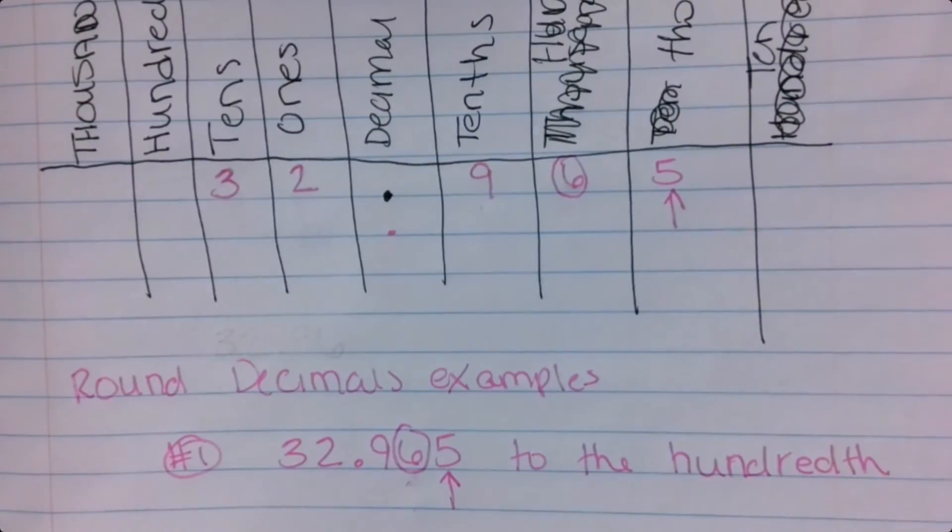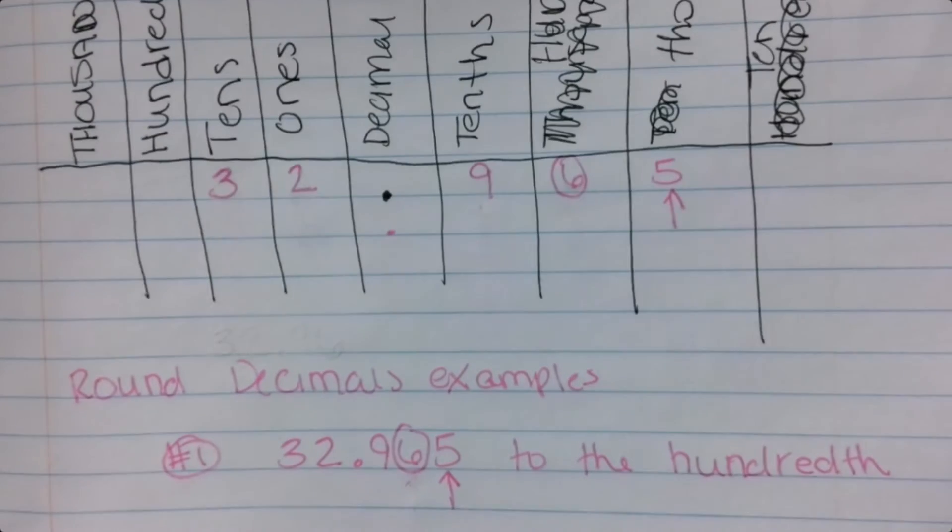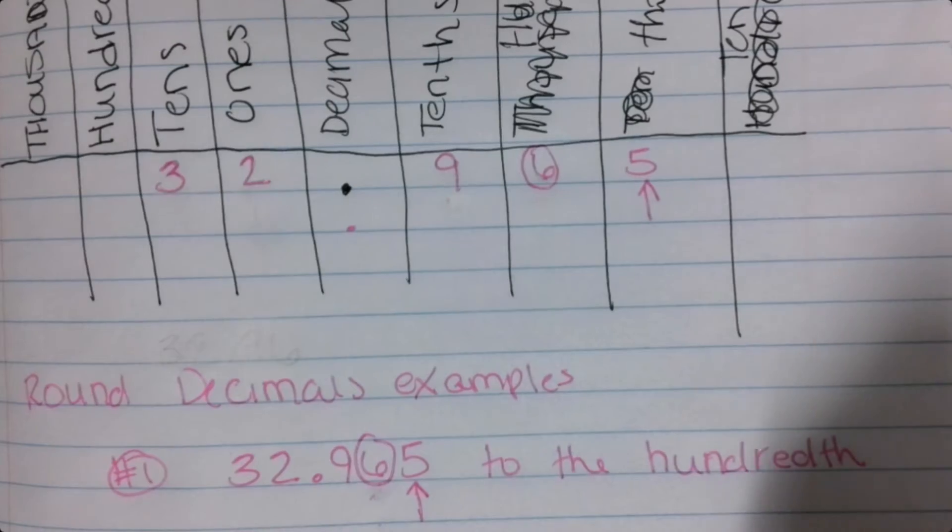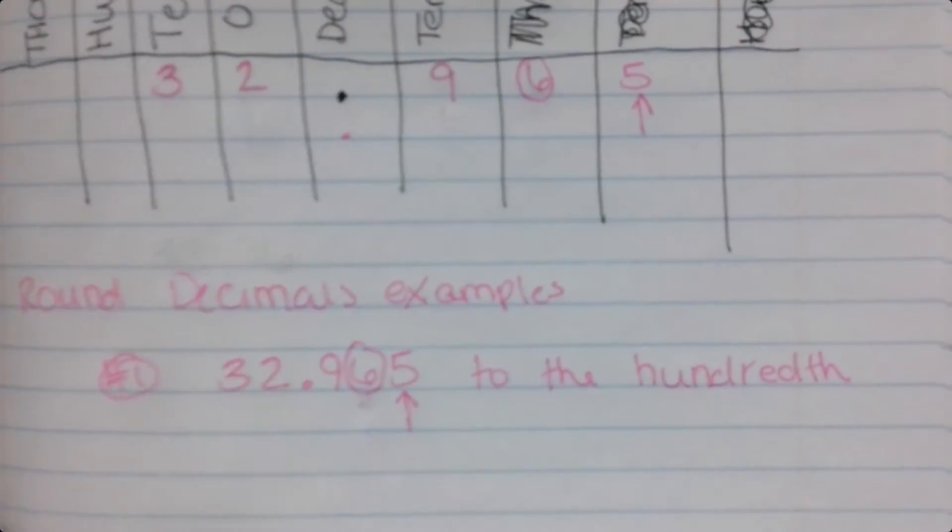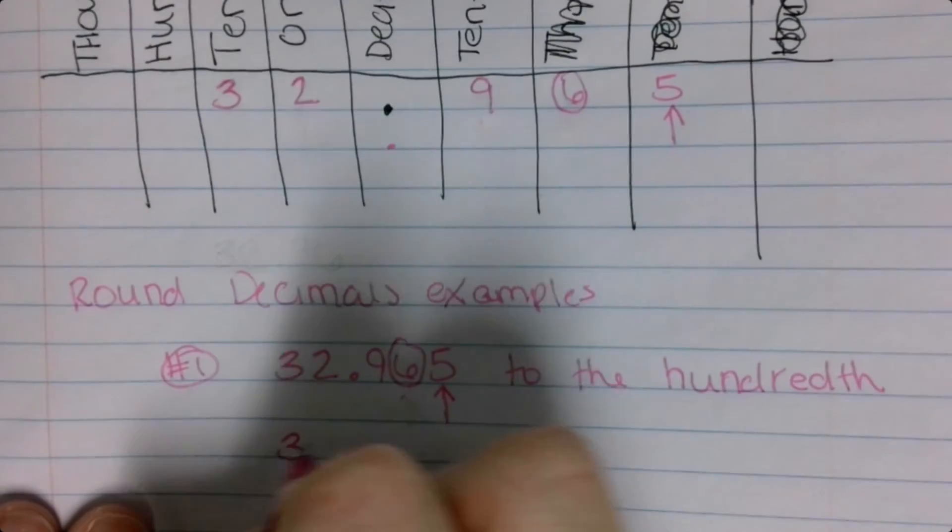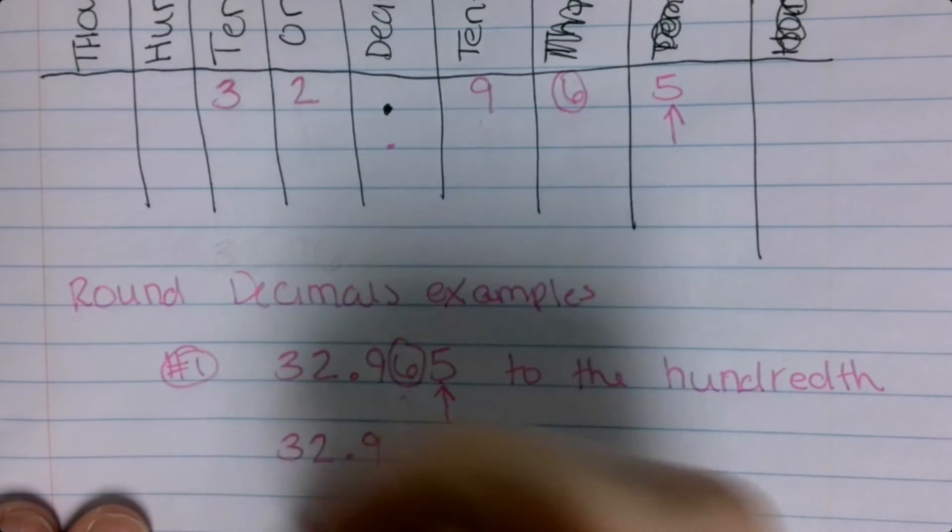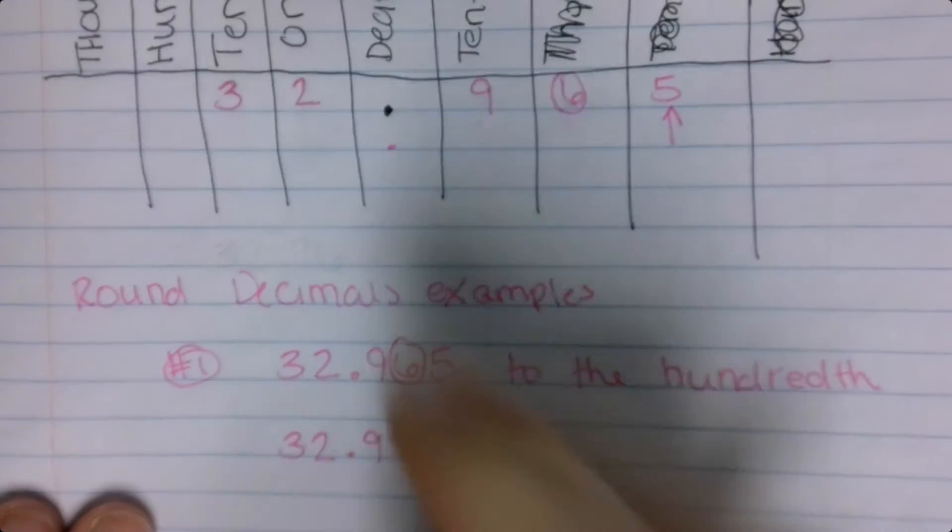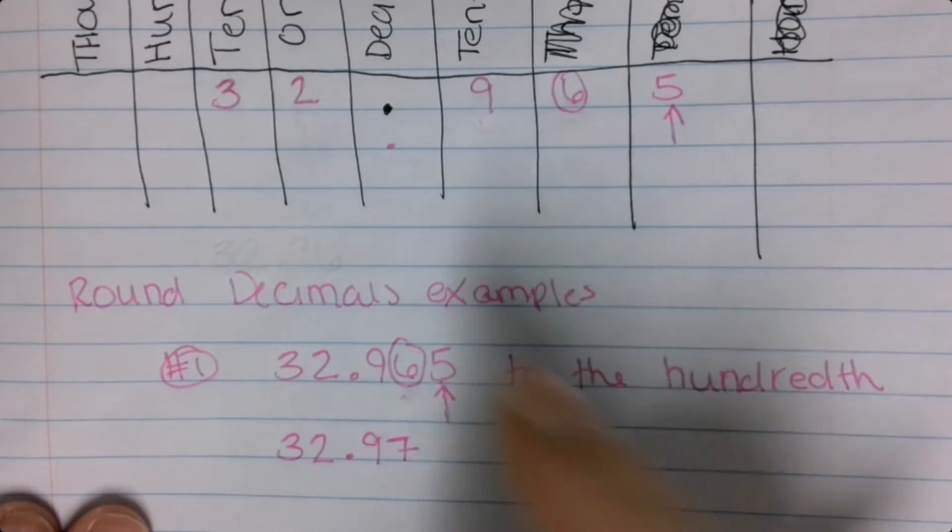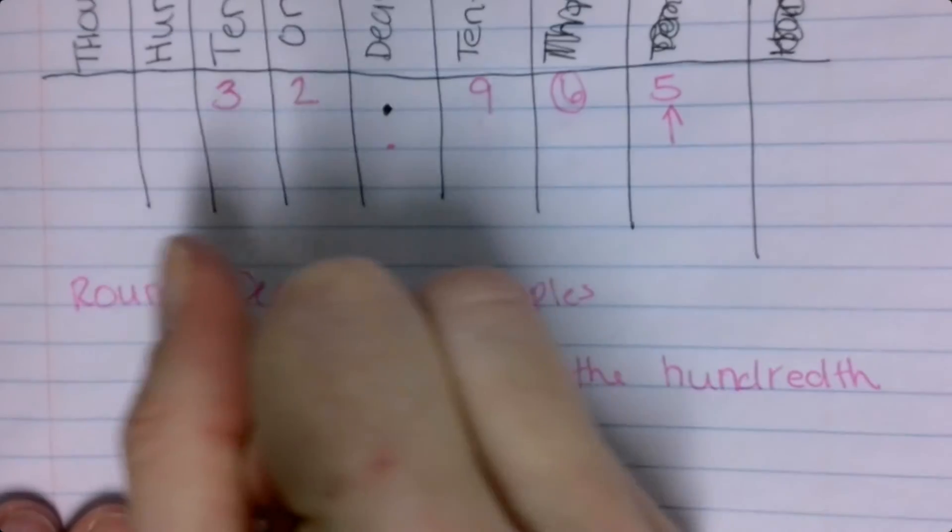So you think through, does the five make the six round up, or does the five make the six stay the same? It makes it round up. So this would be three, two, keep that everything before the number the same. The nine stays the same. This five makes it round up, so this would be a seven, and that's now not there. So this would be your answer.